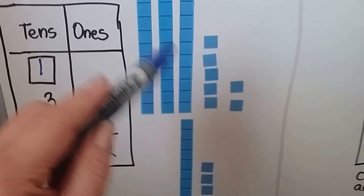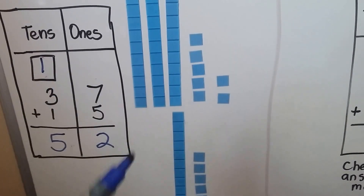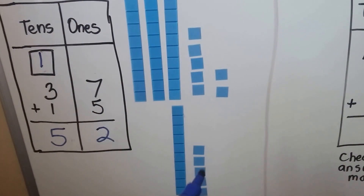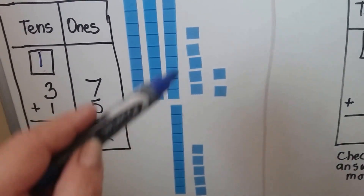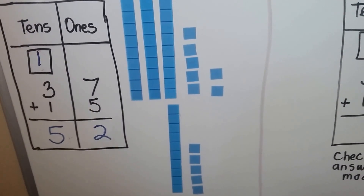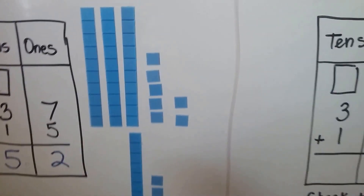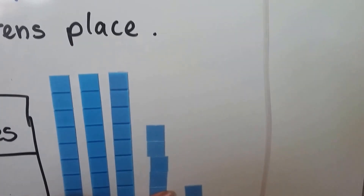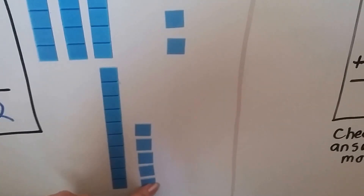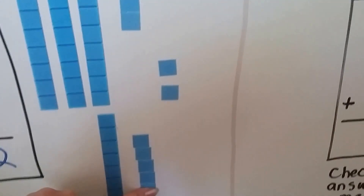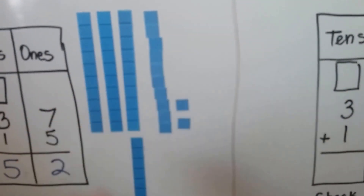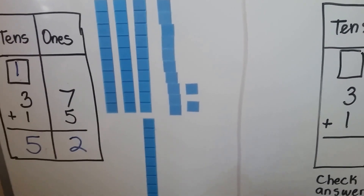We can check this by using models. 37 is 3 tens and 7 ones. 15 is 1 ten and 5 ones. We can take this 5 ones and this 5 ones and make another 10 out of it, because 5 plus 5 equals 10. We can move these up and it will make another long. The 5 plus 5 made a 10.